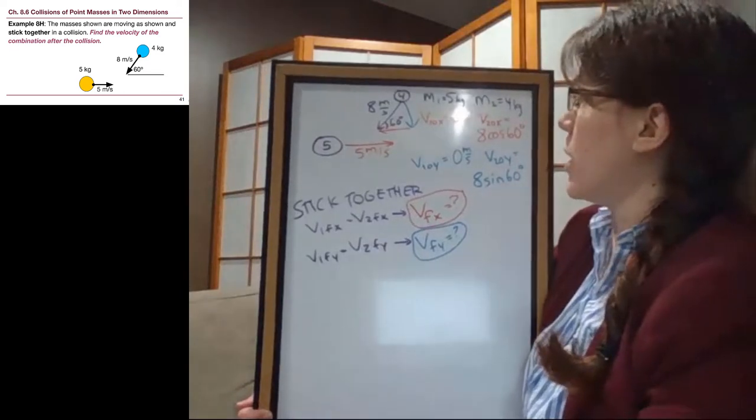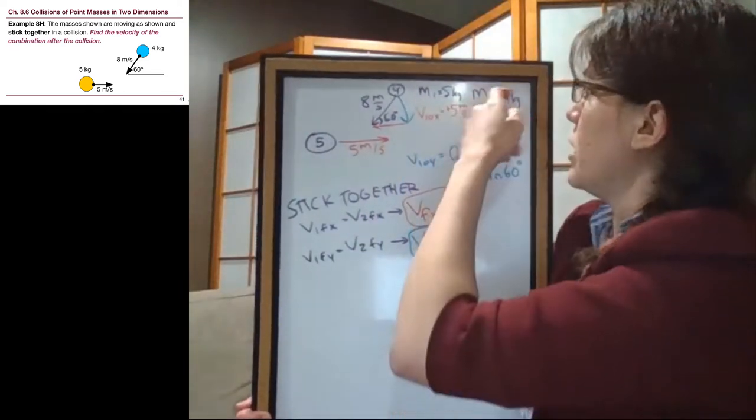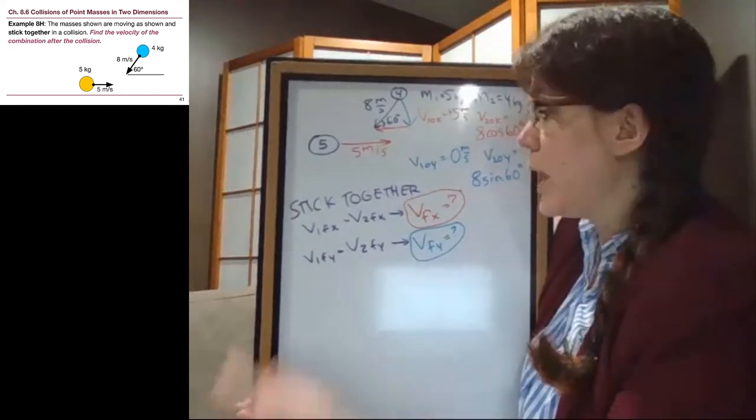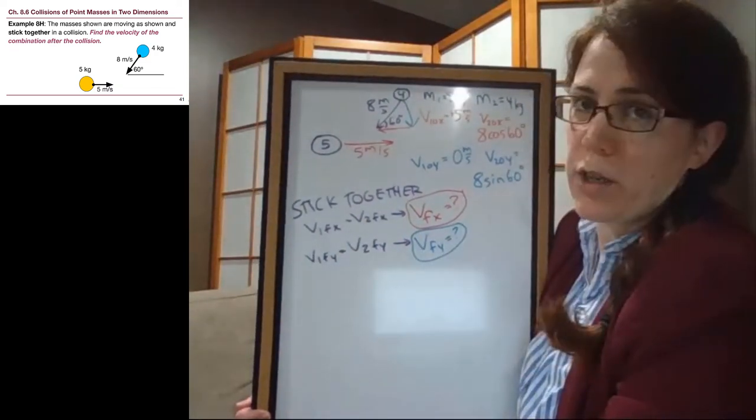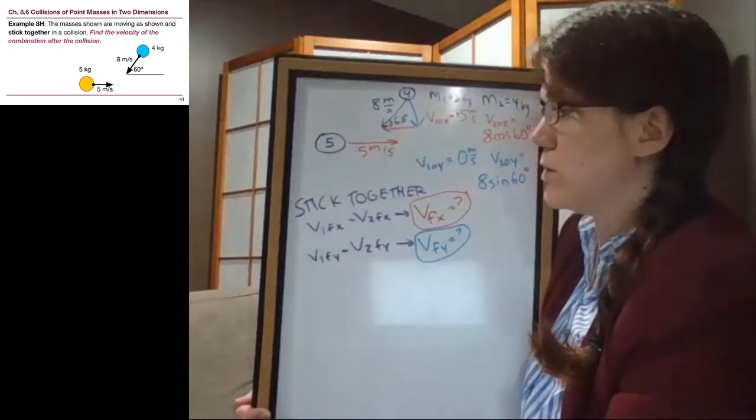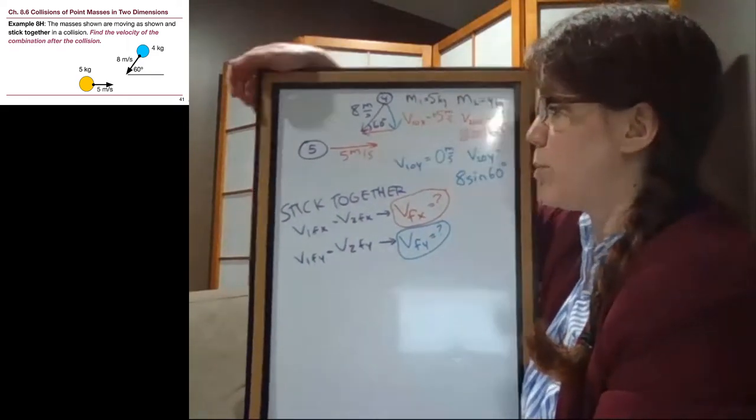Okay, so this is our setup so far. We have 1, 2, 3, 4, 5, 6 pieces of given information, and an understanding that rather than four separate unknowns, we only have two separate unknowns, and we have two different equations, and so this is a completely solvable problem.